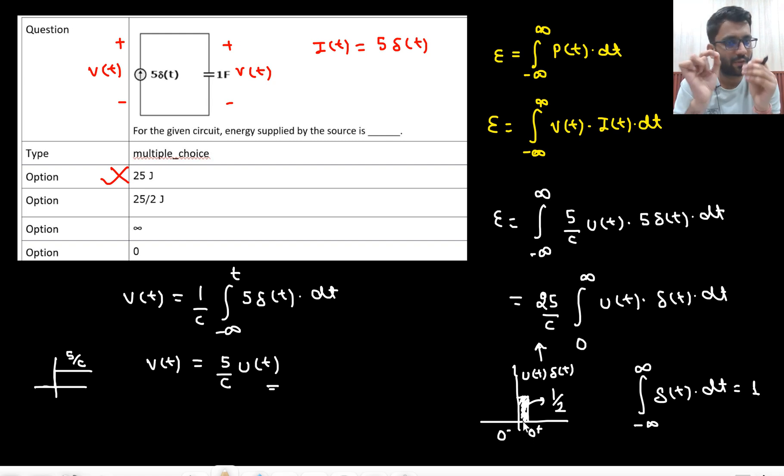Ut means the curve will start from 0. Now delta t is from 0 minus to 0 plus, the area is 1. But since curve is starting from t equals to 0 only, not 0 minus, so the area will be half here. So your energy would be 25 by C into half. C value is 1 Farad. So answer would be 25 by 2 Joule.